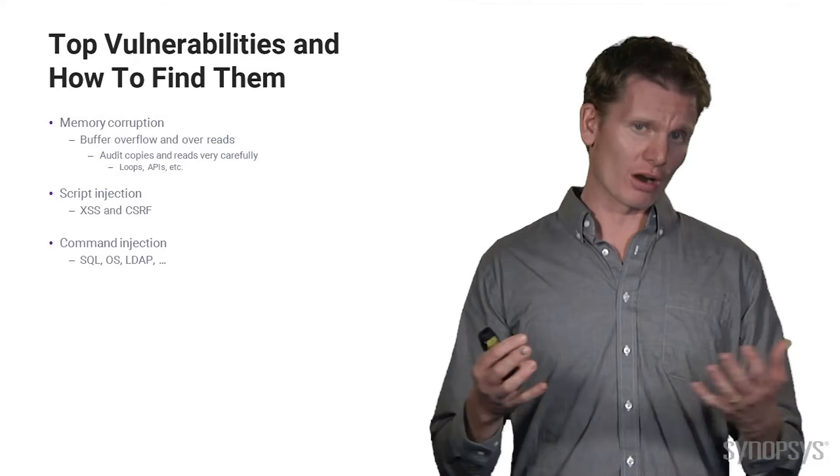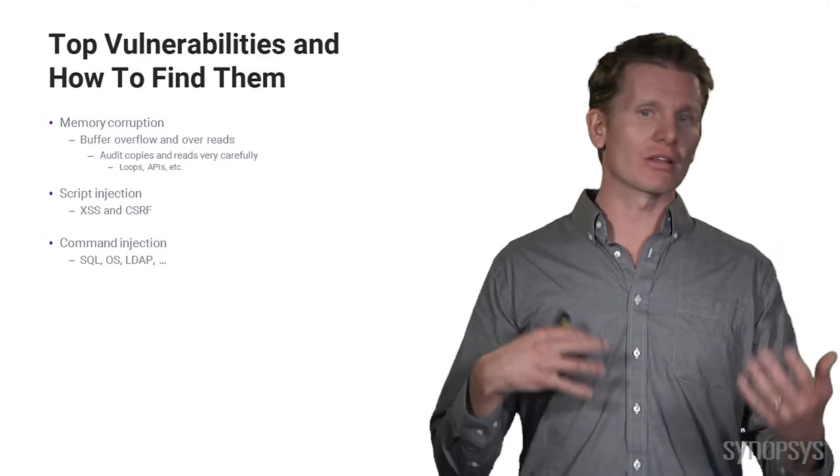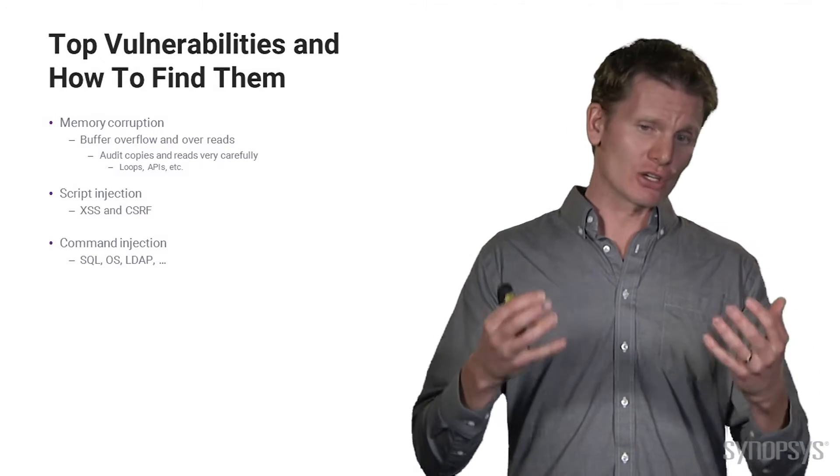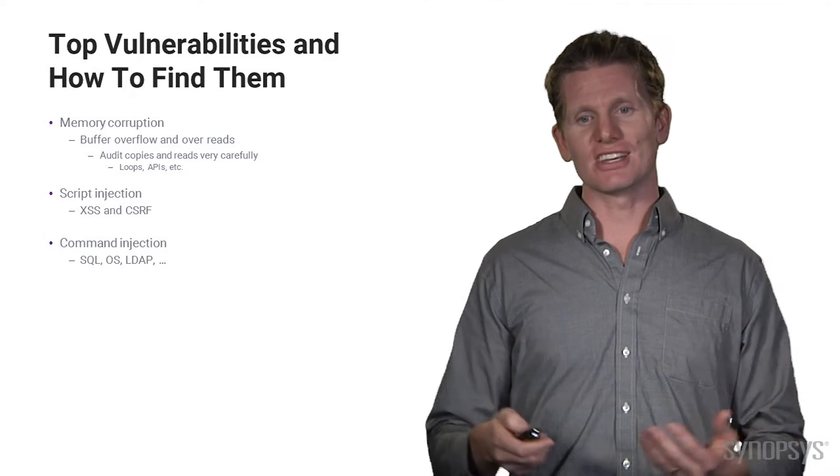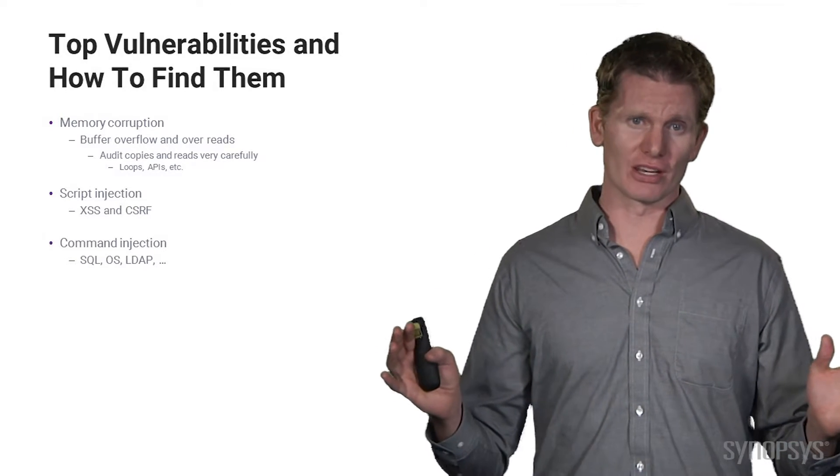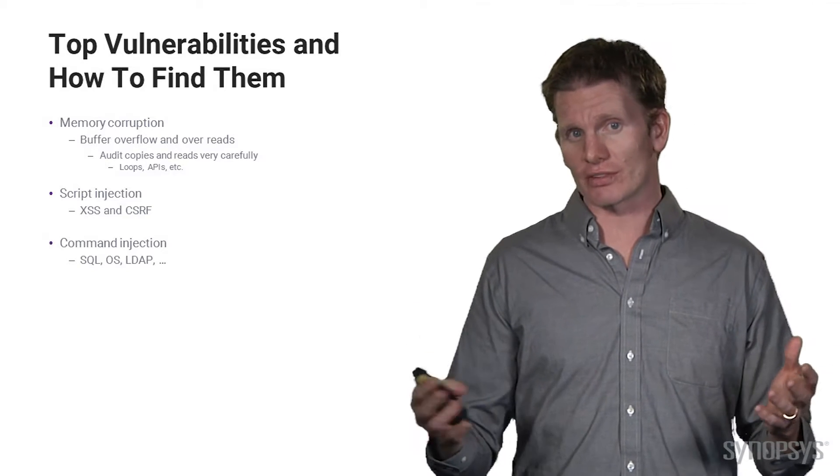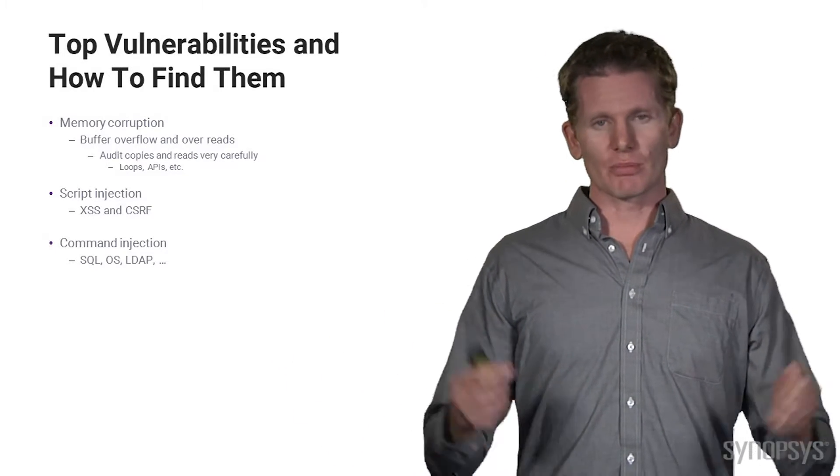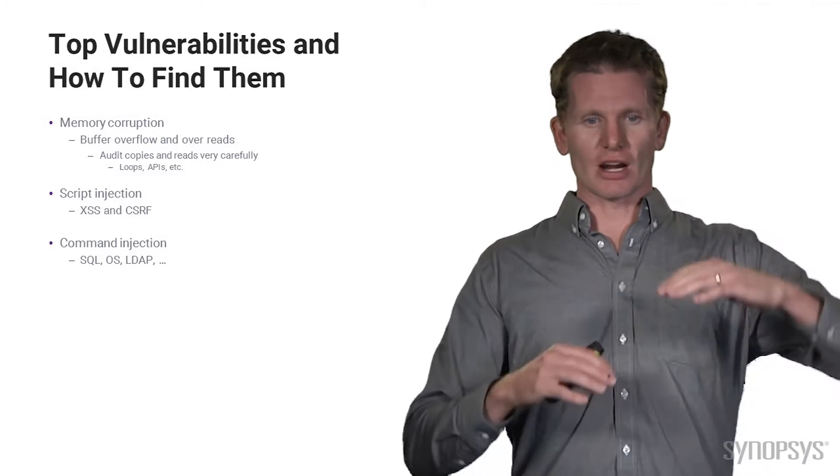Now, of course, there are operating system mitigations and other things nowadays that can help lessen the impact or the severity of these vulnerabilities, but the fact remains that your code has this problem and it needs to be repaired. And it's easy to repair, too. Just change it to an snprintf or some other safe version of that copy, and the problem's fixed. The problem is, how do you know where all those vulnerabilities are?